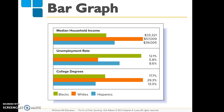Here are better bar graph examples. They show a lot of different information clearly using color — green, orange, and blue represent three different races, and the bar graph compares those races based on median household income, unemployment rate, and college degrees.